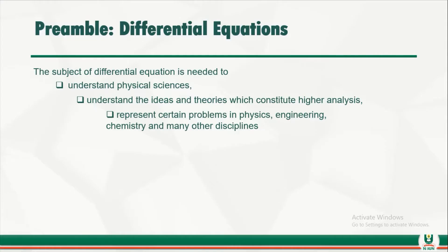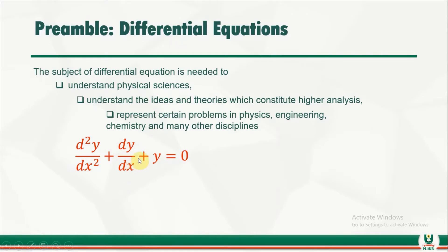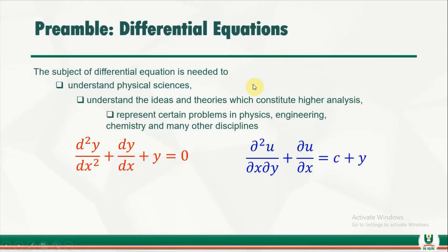Now let's take a look at what we have on the board. This is an example of a differential equation because it is a mathematical expression that relates the dependent variable y with respect to the independent variable x. We can call this an ordinary differential equation because we have only one dependent variable and one independent variable. We have the second derivative and the first derivative here, and this is the unknown function.